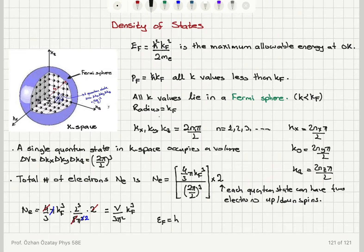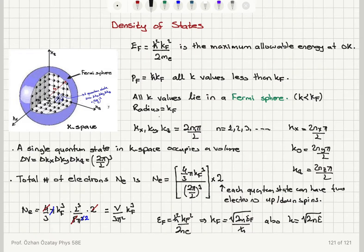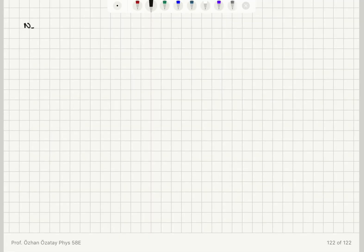The Fermi energy εf is h-bar squared kf squared over twice the mass of the electron, so kf = √(2mεf)/h-bar. For each k value we have the same relationship k = √(2mE)/h-bar, since energy is h-bar squared k squared over 2m. Substituting this kf value into the expression for the total number of electrons, we find N = V/(3π²) × (2m·εf/h-bar²)^(3/2).